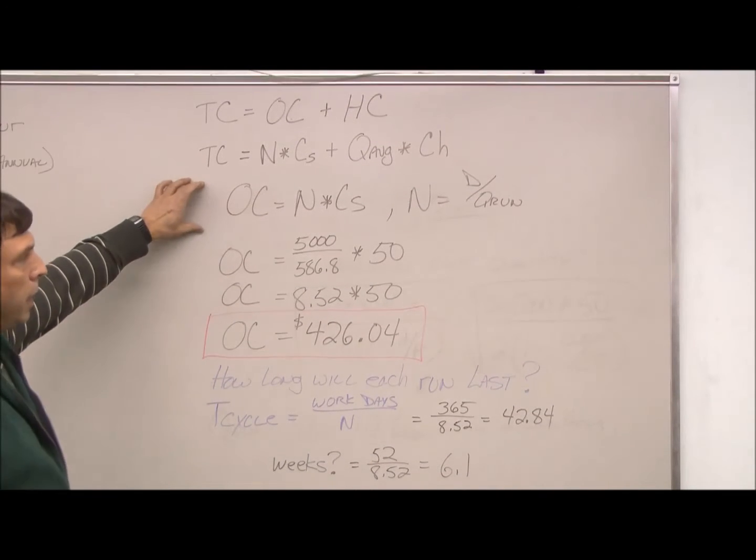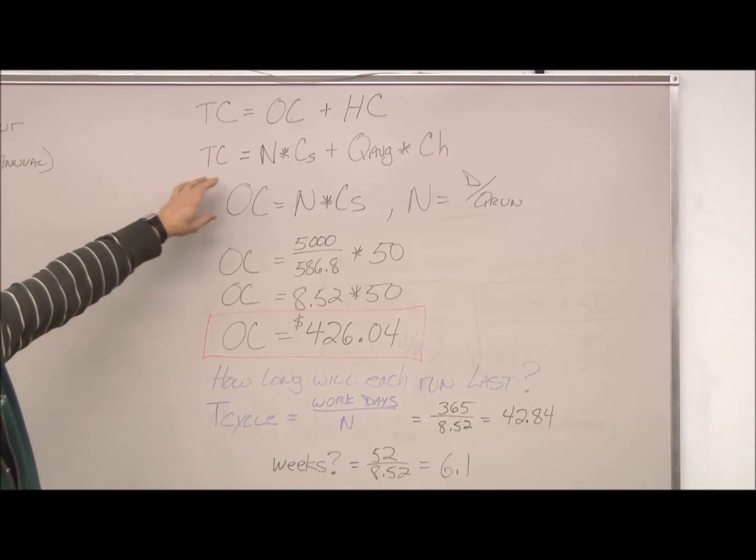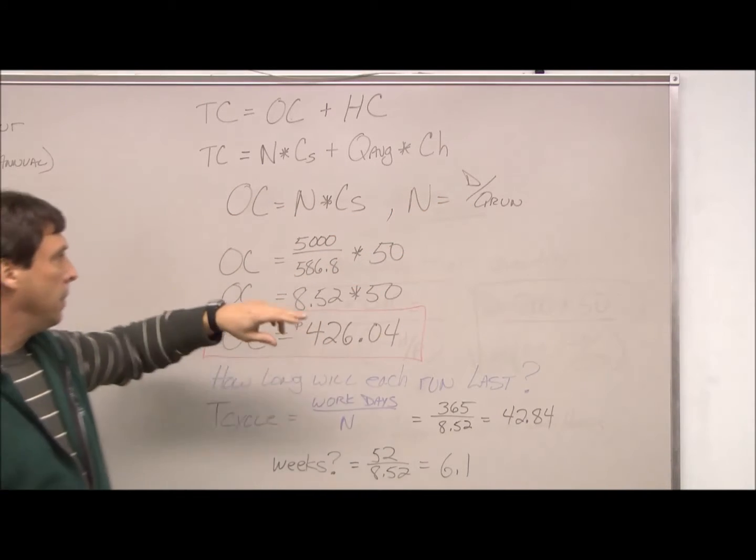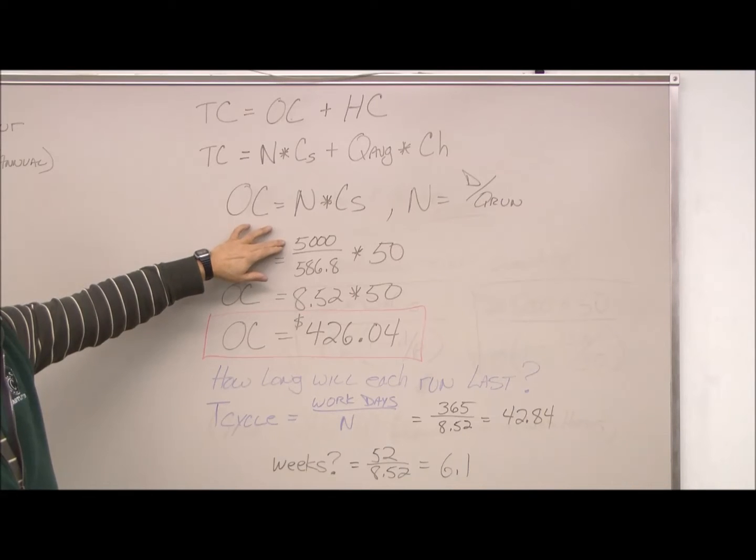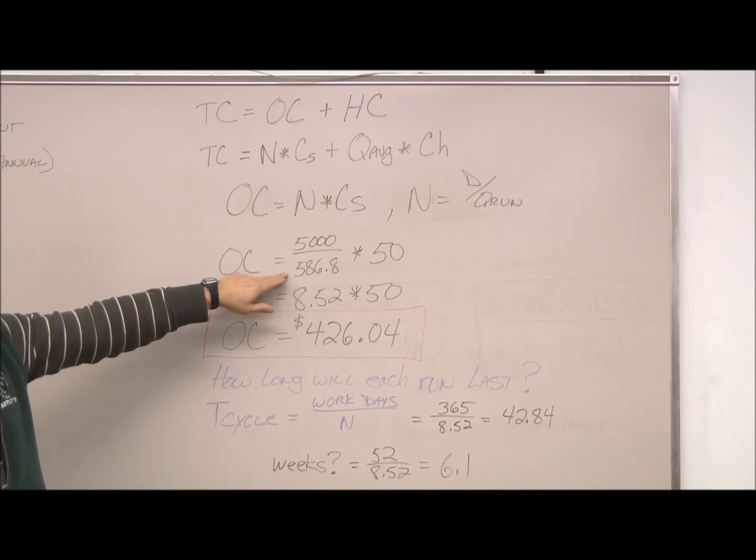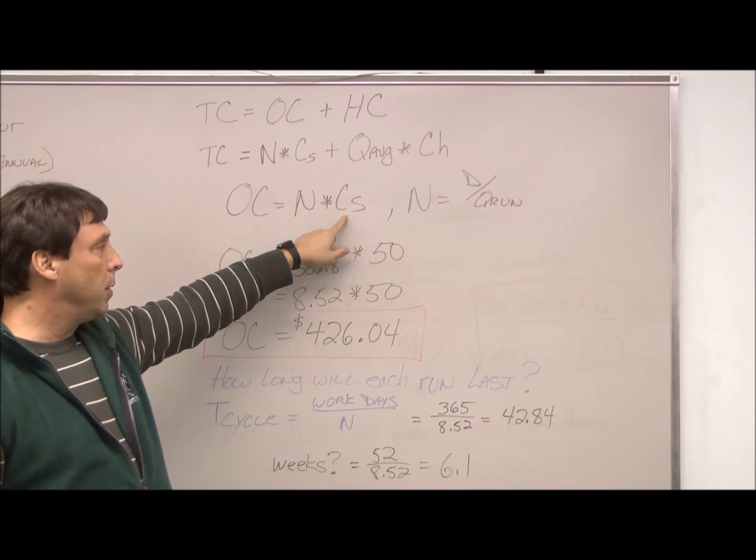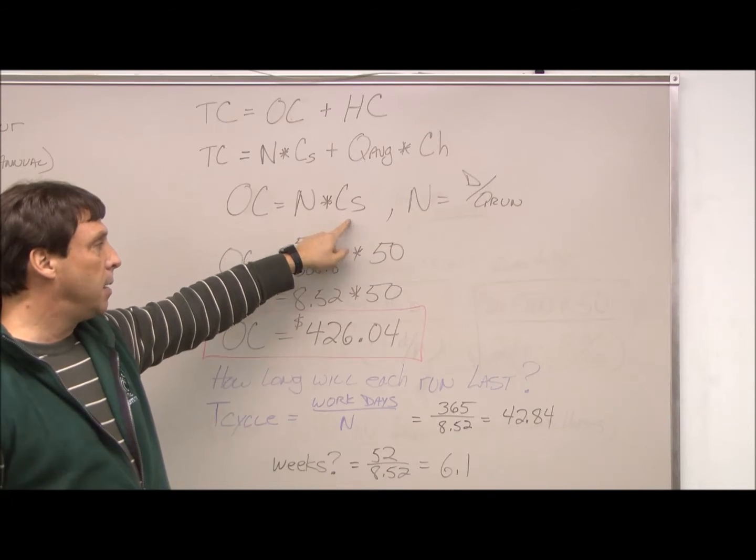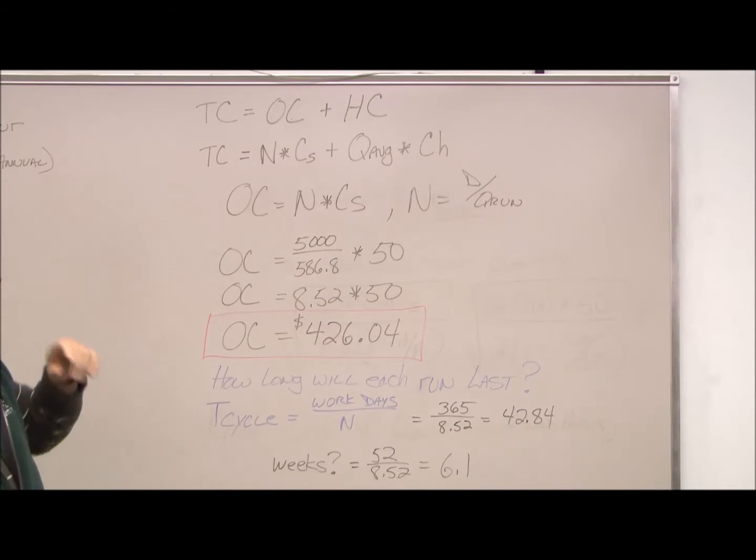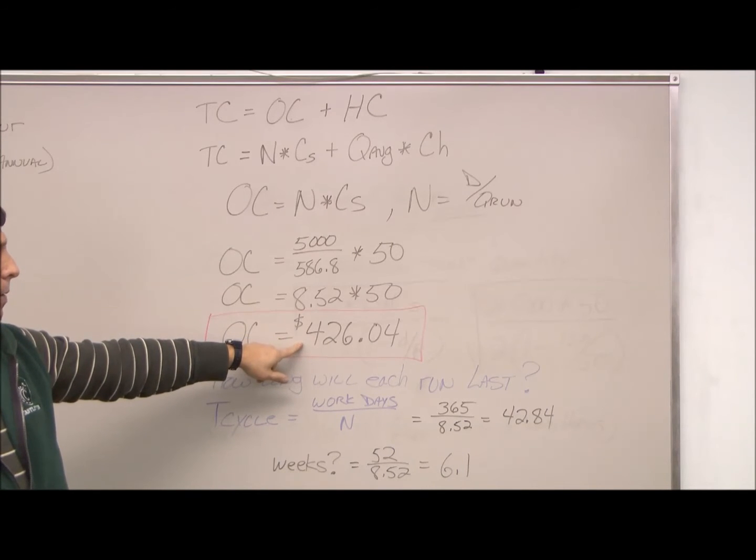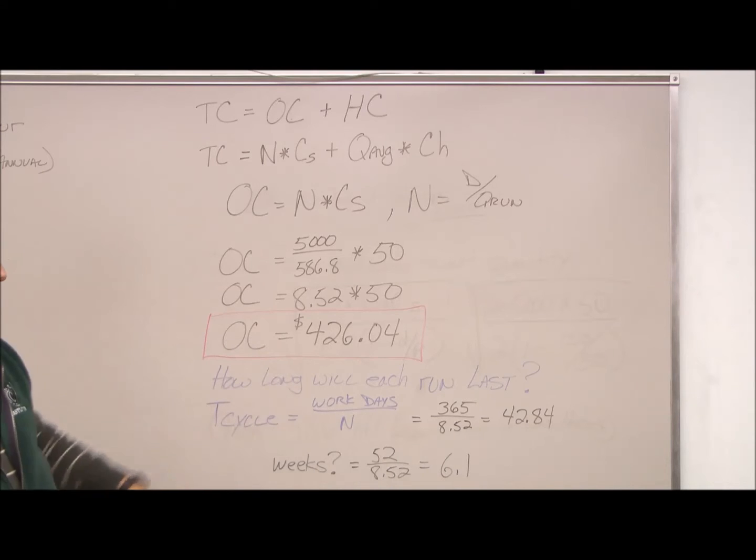So we're looking at ordering costs here. We just determined that our N is D divided by Q run. Our D is, which was given, is 5,000 units annually. We just calculated Q run, which is 586.8. We multiply that by our per unit setup charge, which is 50. So we multiply that all out, and our annual ordering costs are $426.